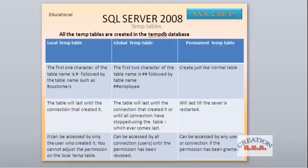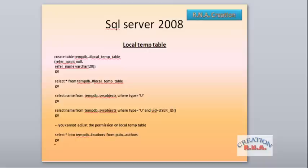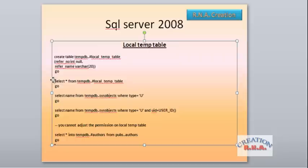Now let's move to the screen and see some of the SQL. Here is the local temp table. The creation statement says: create a local tempdb table with a hash prefix — local temp table — with an integer column. This is how you create a temp table. If you want to select from the temp table, you use a SELECT SQL statement. You need not specify the tempdb when creating the temp table — it will automatically be created in the temp database.